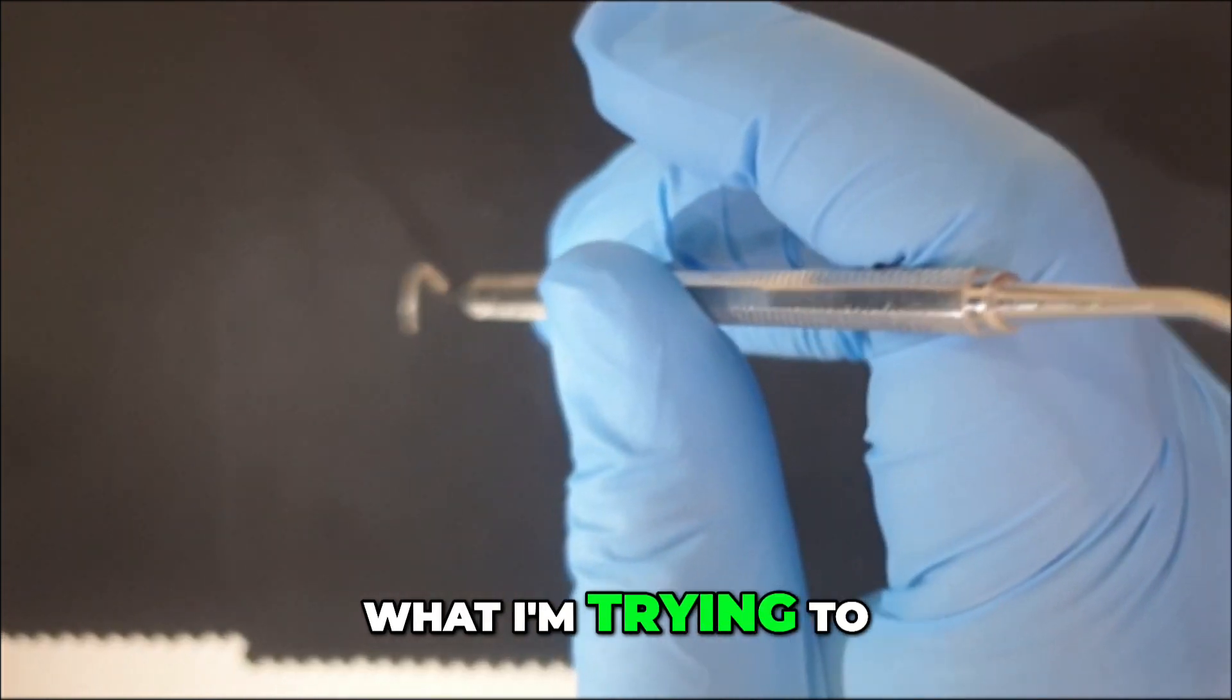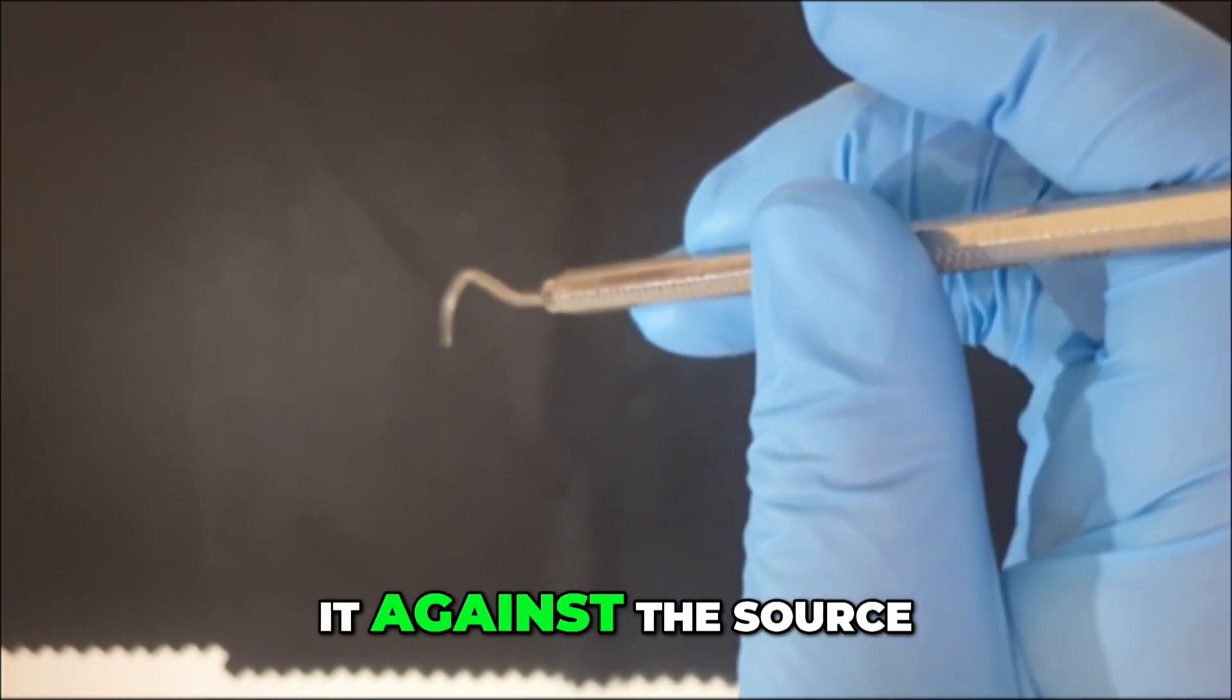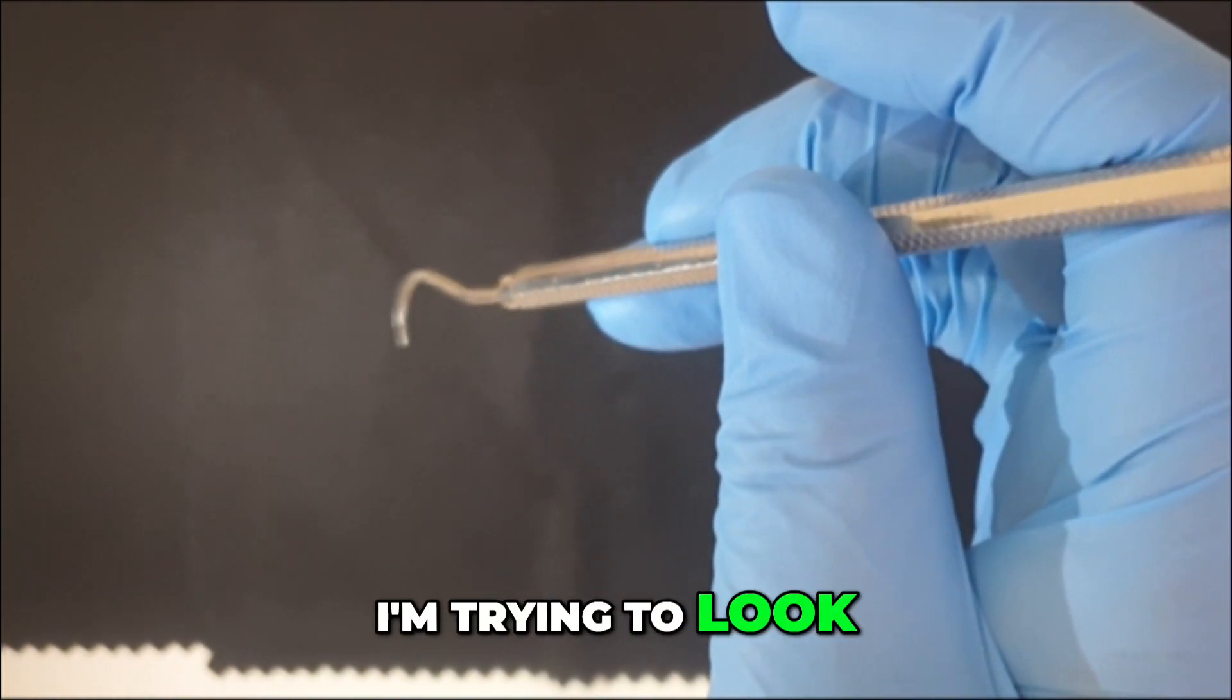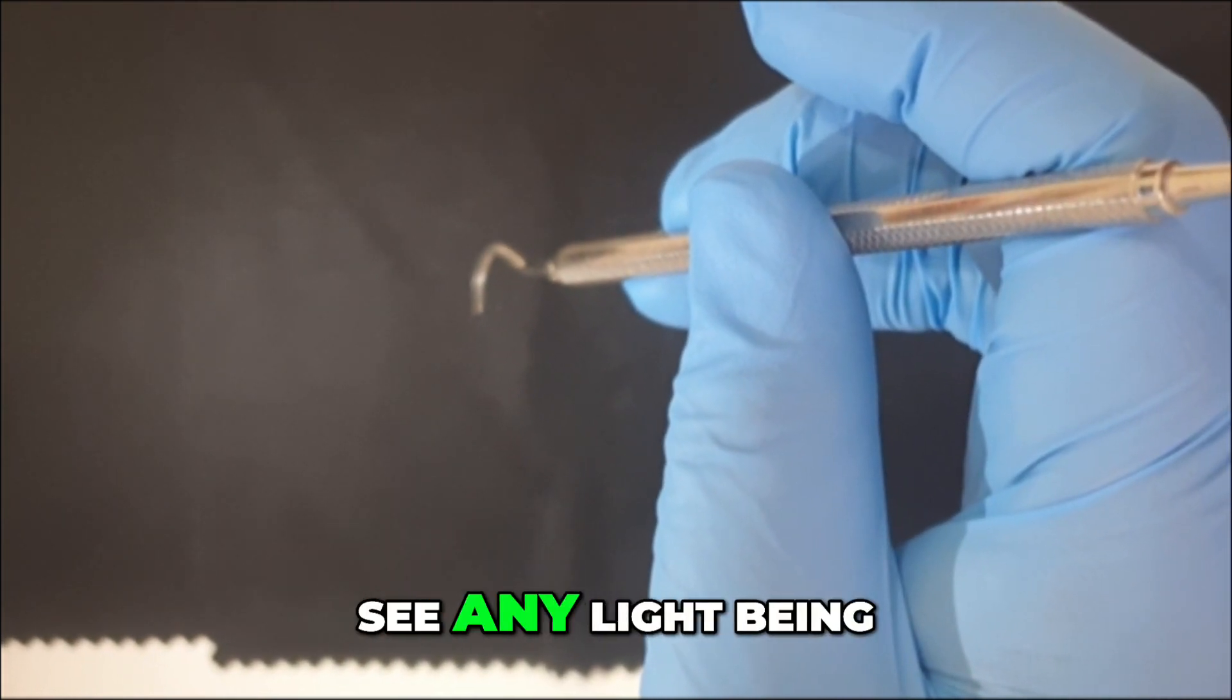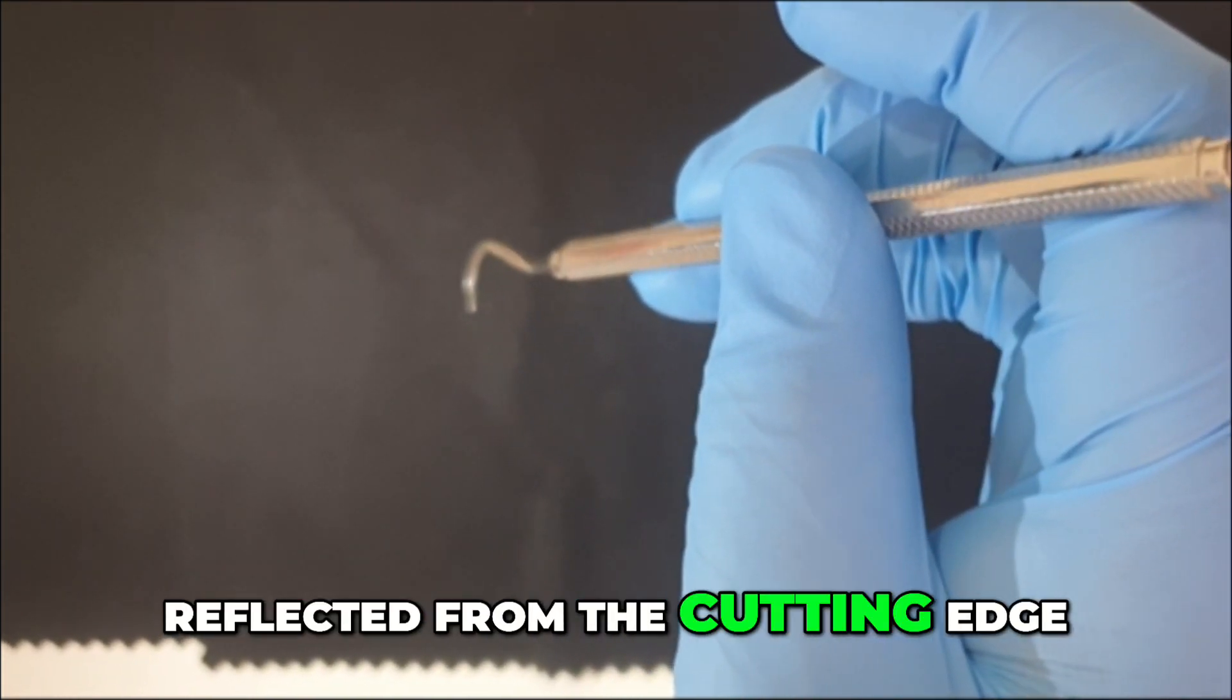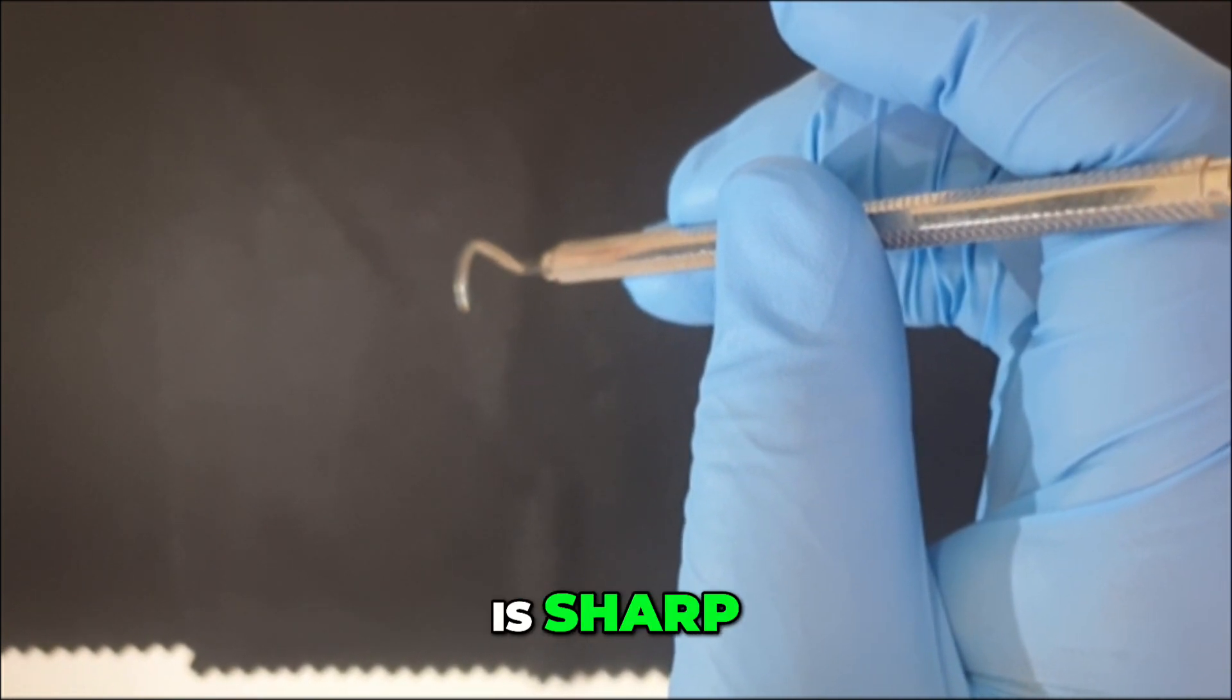Now what I am trying to do is, I am holding it against the source of light. I am trying to look at the cutting edge. I am not able to see any light being reflected from the cutting edge. That means my instrument is sharp.